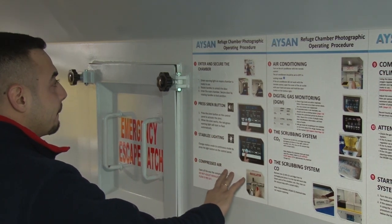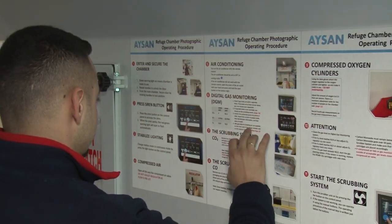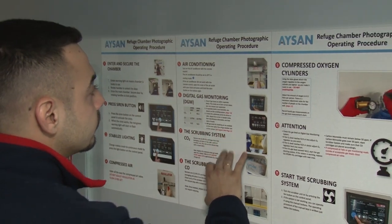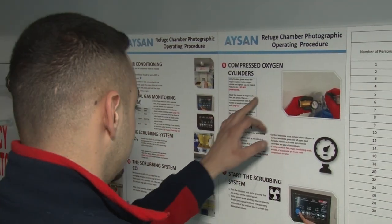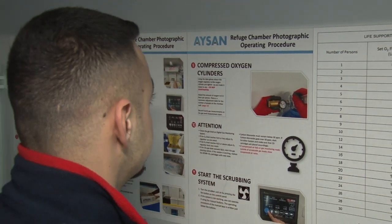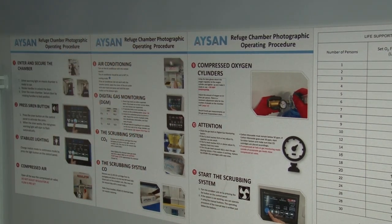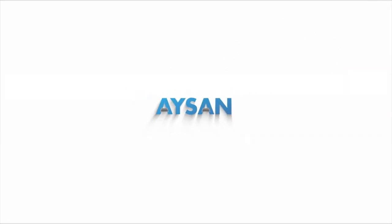You must ensure your refuge chamber is in proper operating order so that in the unfortunate event you need to use it, you will be prepared. This can be accomplished through weekly checks, as well as regular servicing that can be carried out by ASIN. For further details or if you have questions regarding the operational procedures, please contact us through www.minerefugechamber.com.